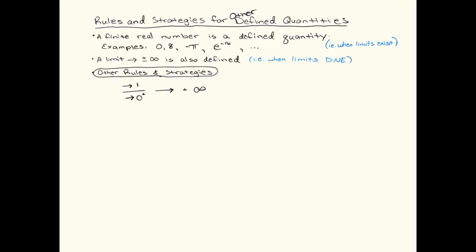Other types of quantities that you might encounter. Remember these arrows mean the word approaching. So if you have a numerator approaching 1 and a denominator approaching 0 from the right with positive numbers, then that'll go to positive infinity. If you have the numerator approaching 1 and the denominator approaching 0 with negative numbers, that'll go to negative infinity.